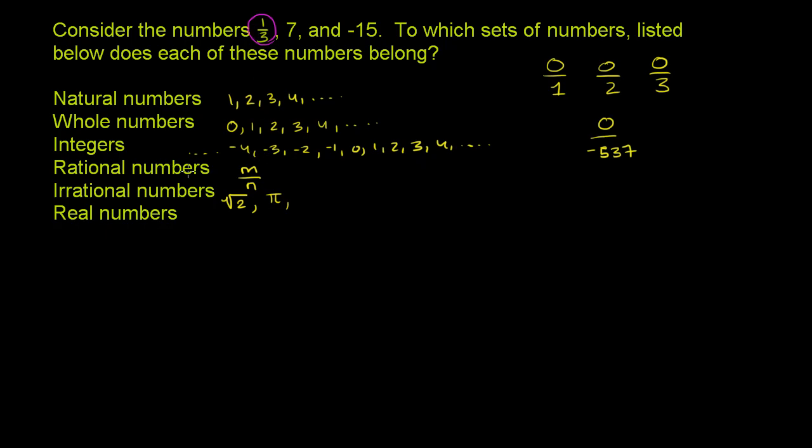Is it a rational number? Well, sure it is. It can be represented as 1 over 3. Both 1 and 3 are integers. So 1/3 is rational. And if something is rational, it cannot be irrational. There's nothing that's both rational and irrational. This literally means not rational. And it is also a real number. Pretty much all of these are going to be real numbers.